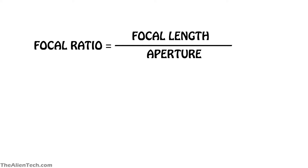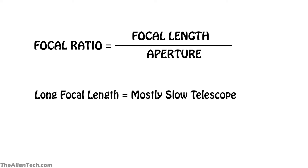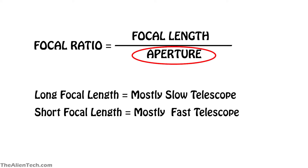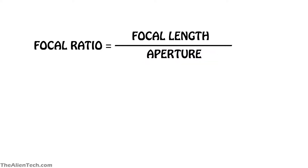From the focal ratio formula, you can know that a telescope with a longer focal length will mostly be a slow telescope, and a telescope with a short focal length will mostly be a fast telescope. Aperture is also considered in the focal ratio formula, so aperture also affects the focal ratio. For example, a telescope that has a long focal length and a very big aperture may have a focal ratio below 5, so it can also be a fast telescope.